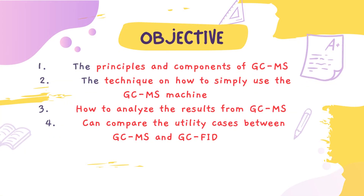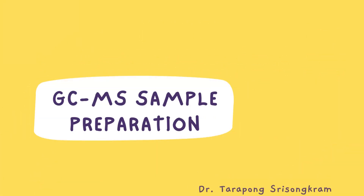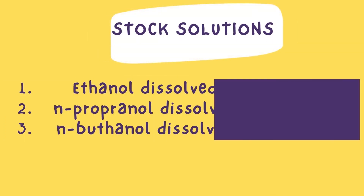Objectives of today's experiment include: 1. Students know the principles and components of GCMS. 2. Students know how to simply use the GCMS machine. 3. Students know how to analyze the results from GCMS. 4. Students can compare the utility cases between GCMS and GCFID.